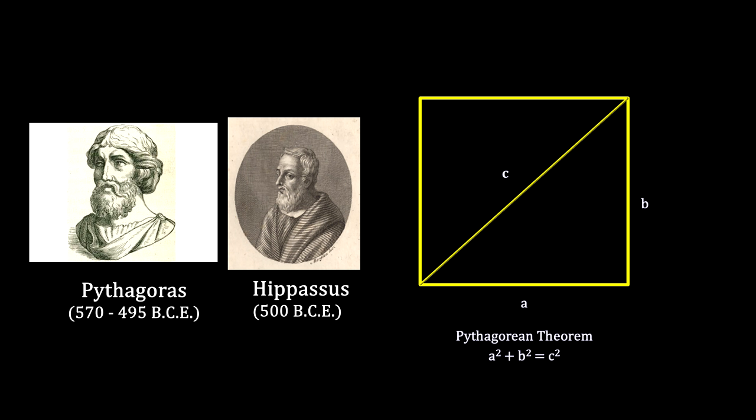Hippasus, born around 500 BCE, was a Greek philosopher of the Pythagorean school of thought. He is widely regarded as the first person to recognize that a square's diagonal cannot be expressed as the ratio of two integers.